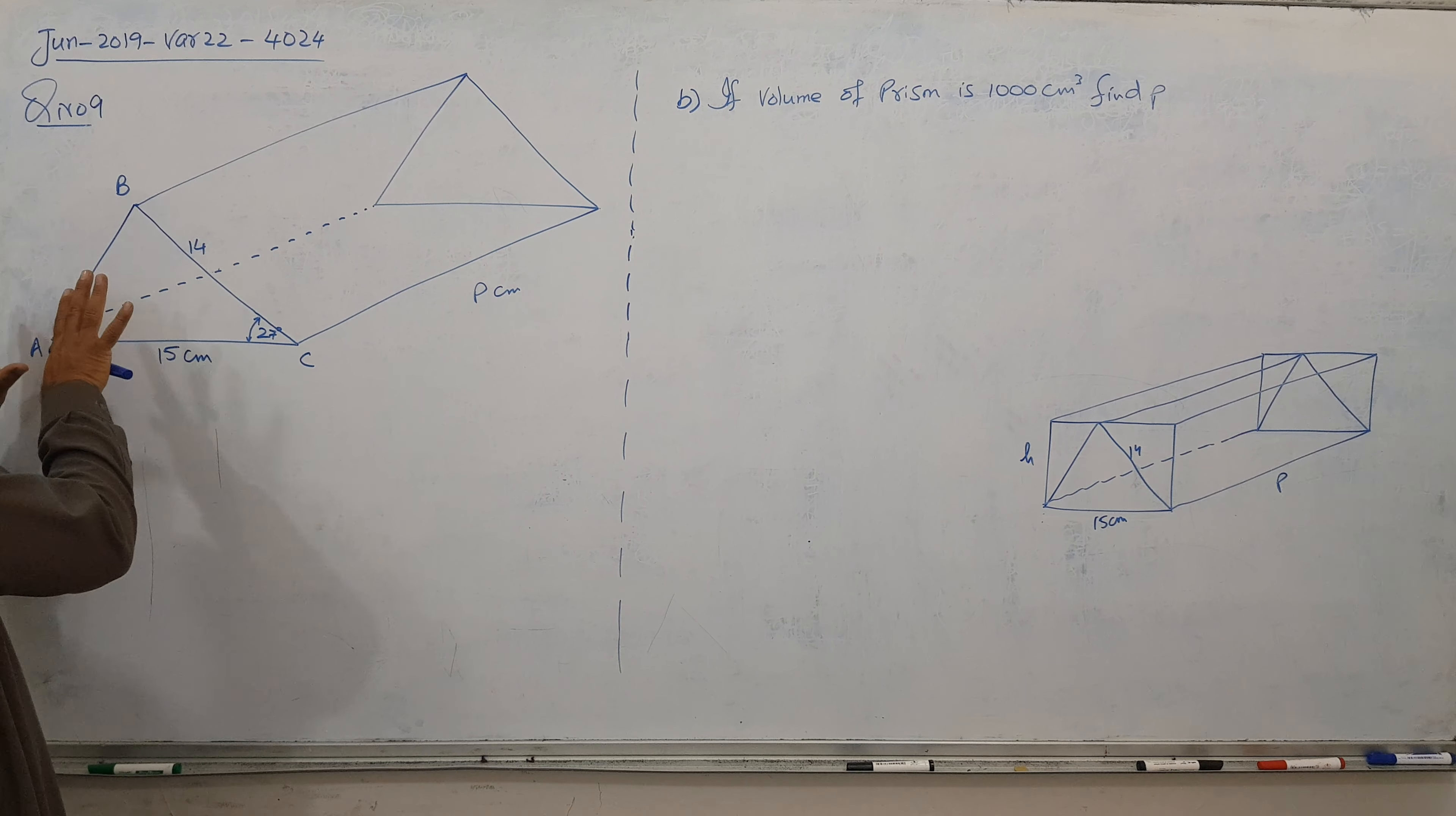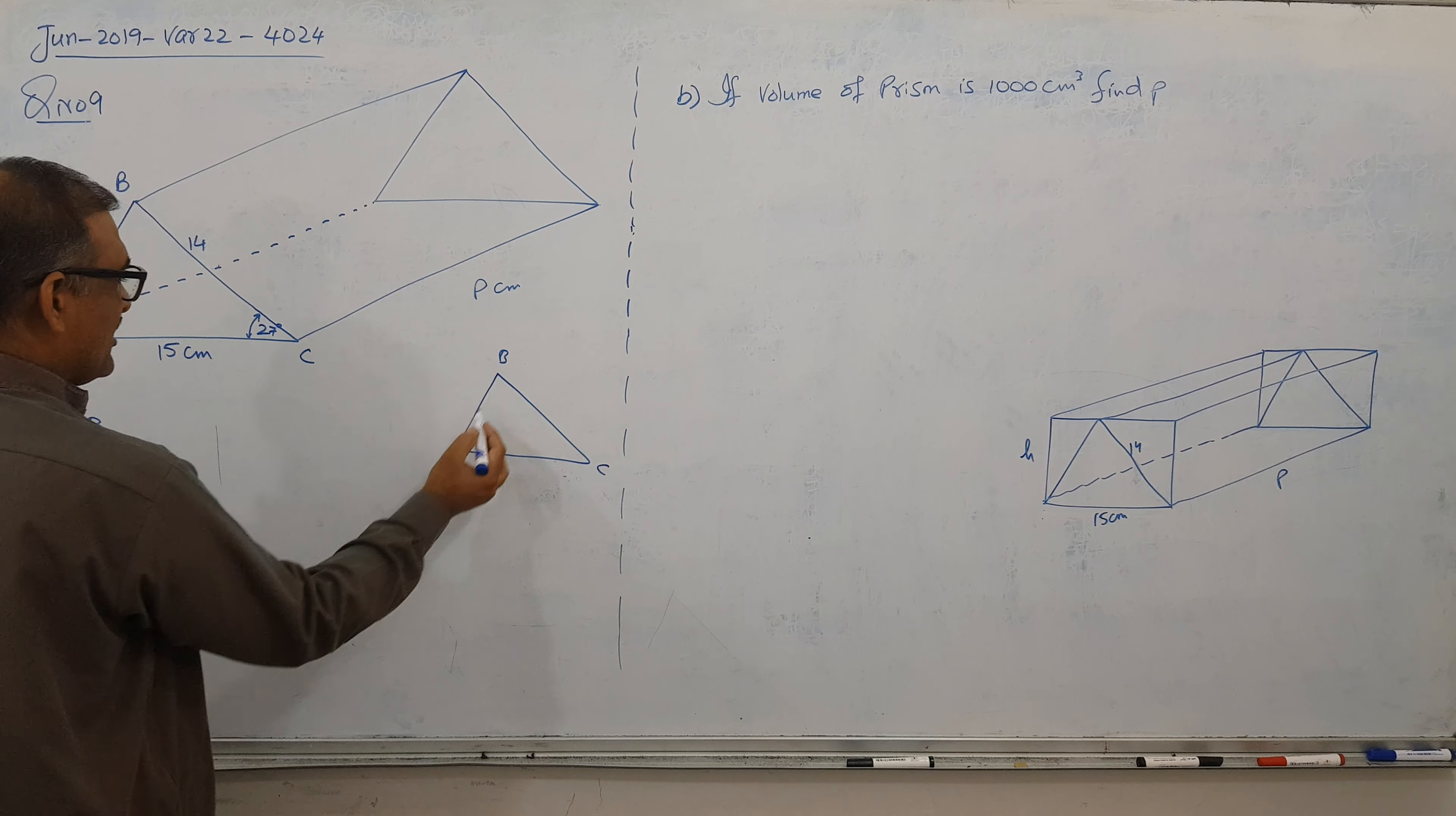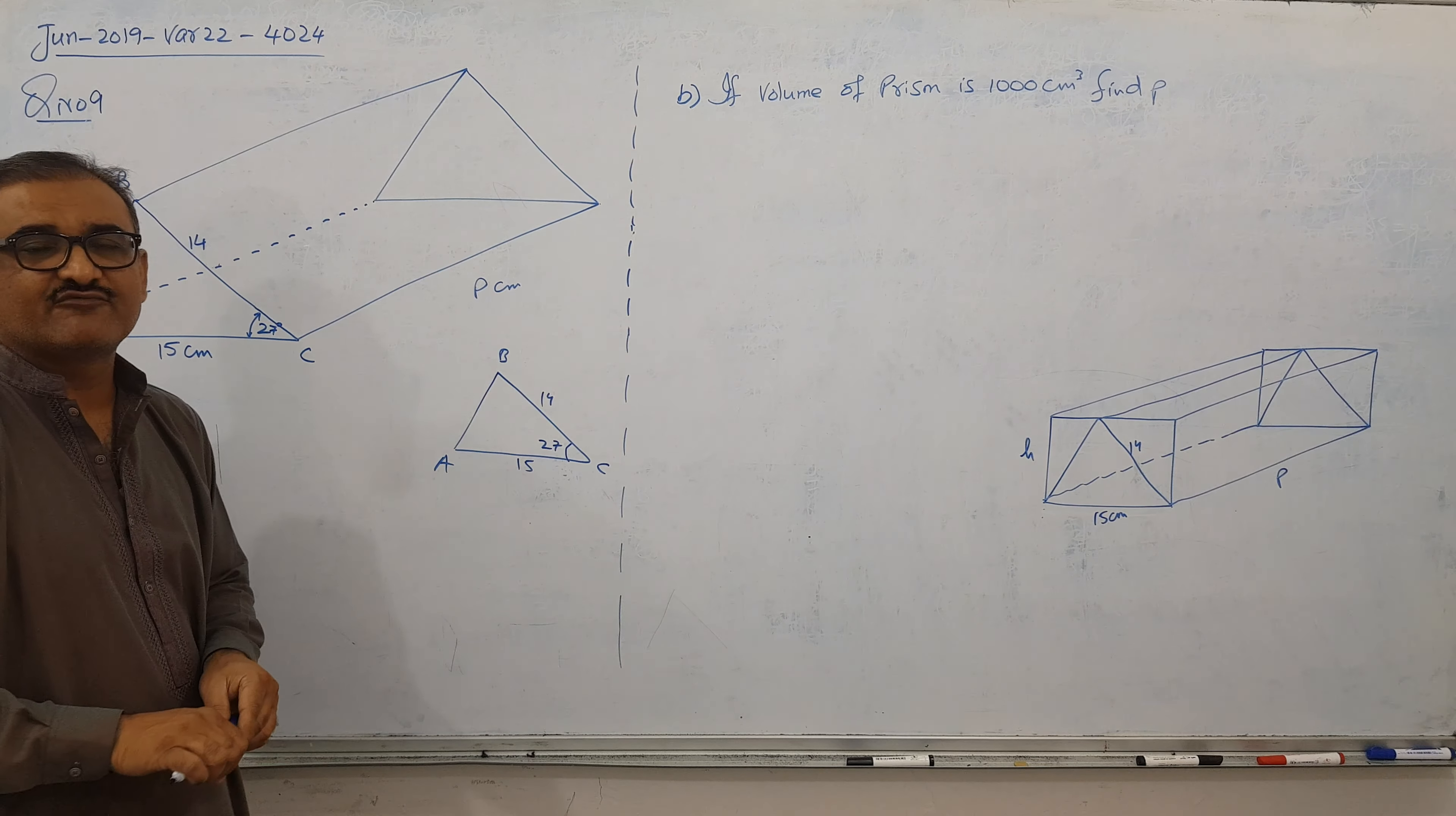You can see this is the cross-section area and throughout remains the same. So what the question is asking here, first of all, AB. I think it's very clear we have this kind of thing given. There is C, there is B, and there is A. Basically extract the triangle and make it separate. And this is 27, this is 14, this is 15, and we need to find AB. So simply, two sides and the included angle, we need to find the third side using cosine rule.